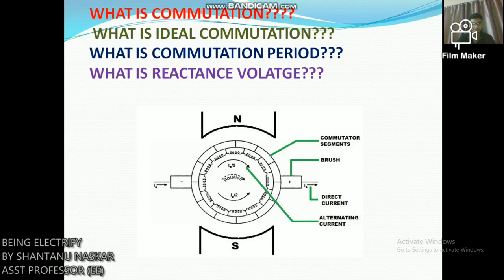When commutation takes place, the coil undergoing commutation is short-circuited by the brush. The brief period during which the coil remains short-circuited by the brush is known as the commutation period, denoted by Tc. If the current reversal is completed by the end of the commutation period, it is called ideal commutation. If the current reversal is not completed by that time, then sparking occurs between the brush and the commutator, resulting in progressive damage to both.